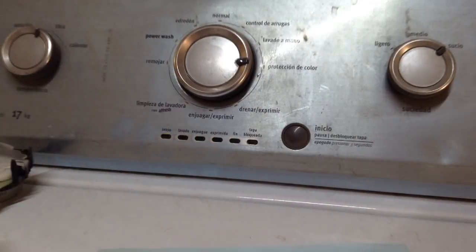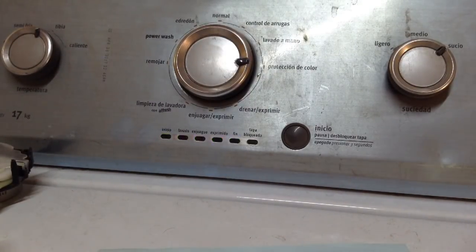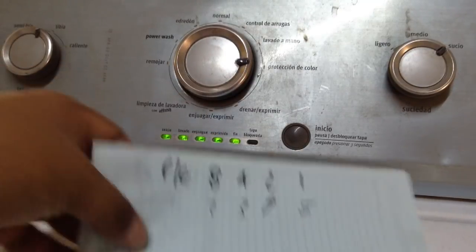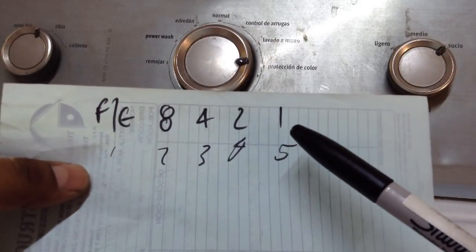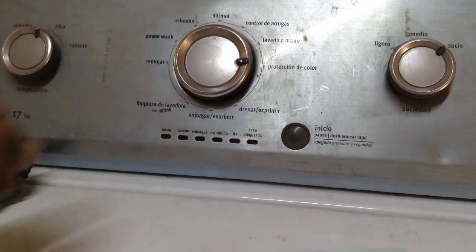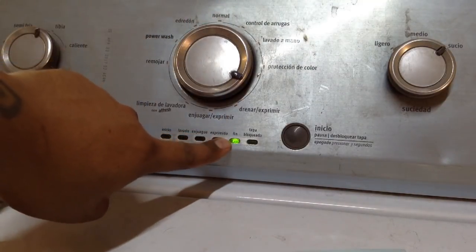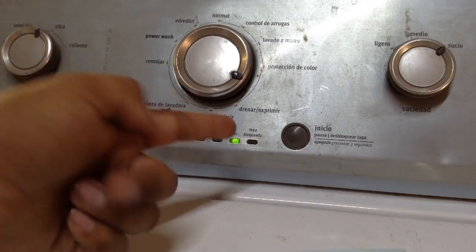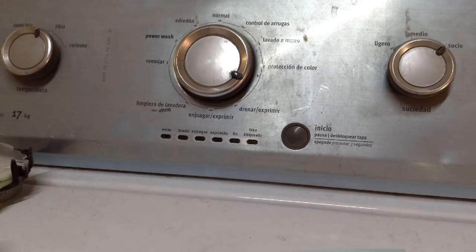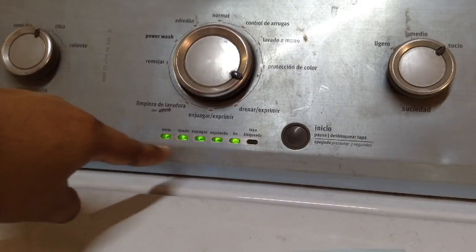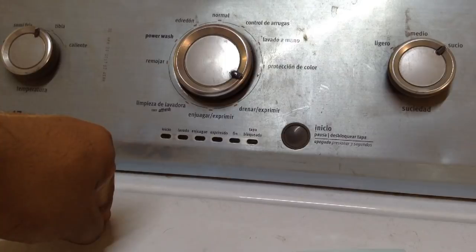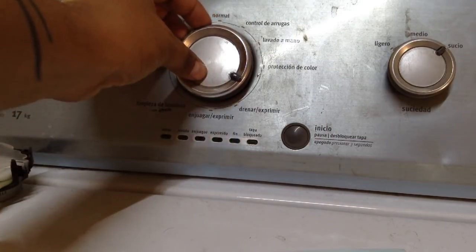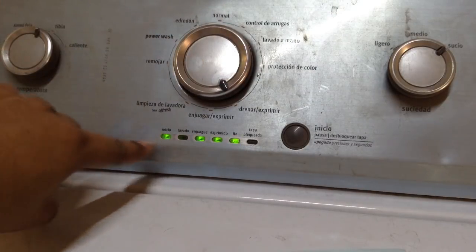Entonces para leer el modo de falla, perdón, los errores acumulados en el buffer de la memoria de la lavadora iremos al menú 1. Damos un clic a la derecha y se encenderá solamente ese LED. Cuando se encienda ese LED, estamos en el menú número 1. Vamos a ingresar en él dando un clic.